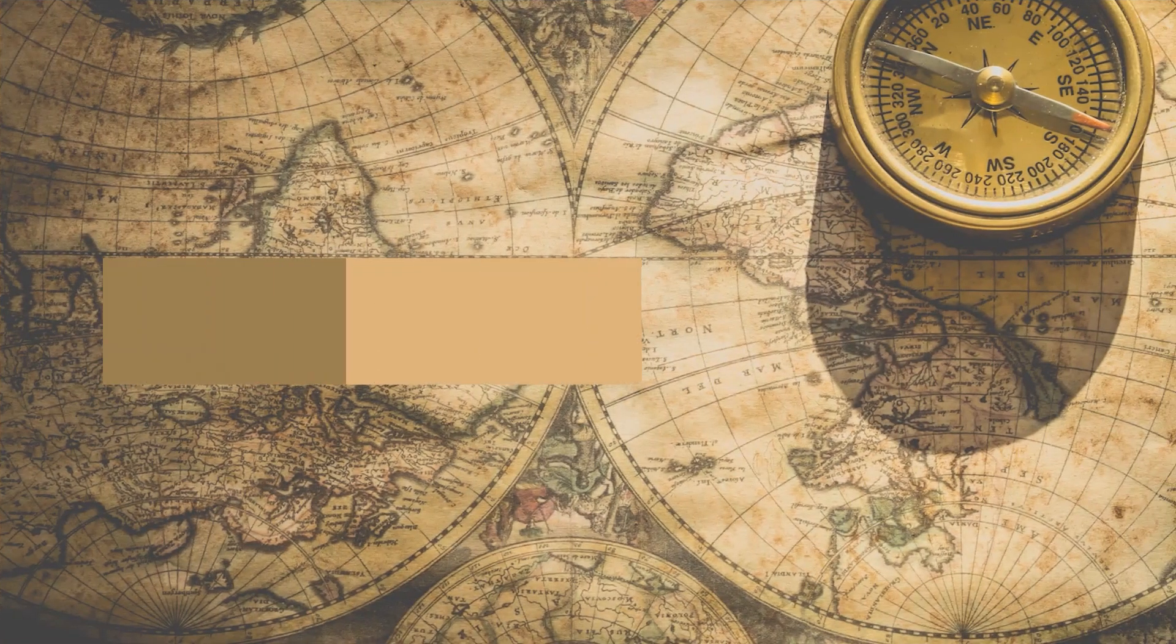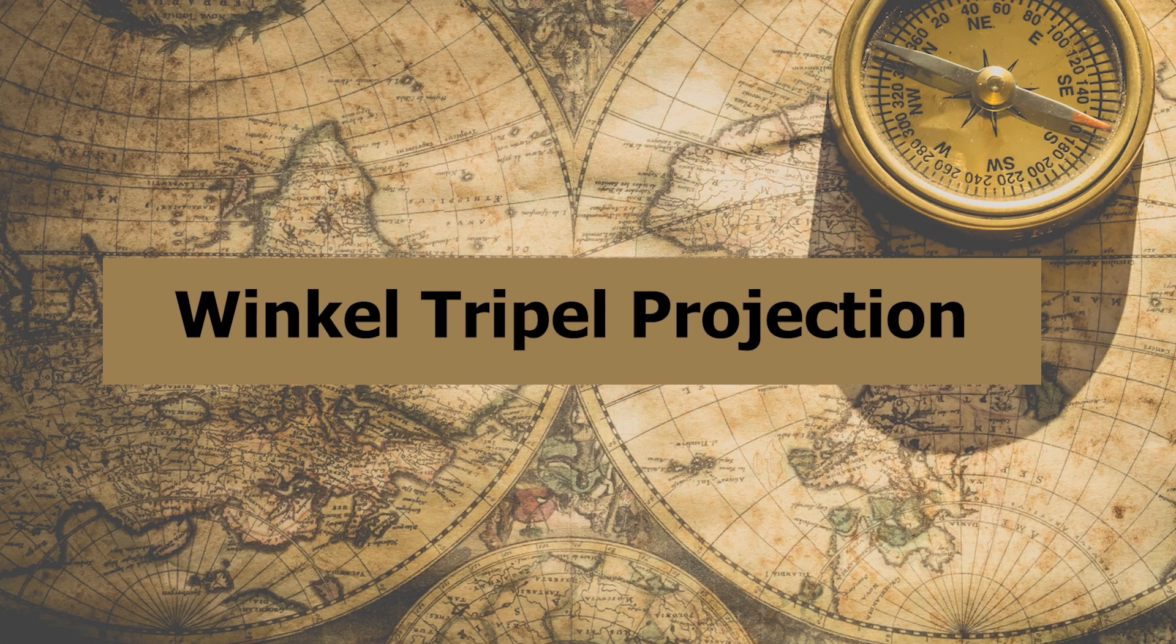The National Geographic Society selected another map, Winkel Tripel Projection, which was released in 1921.